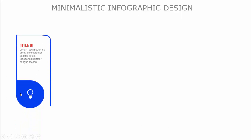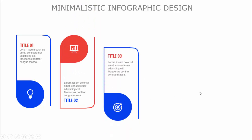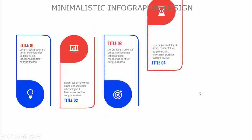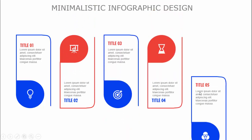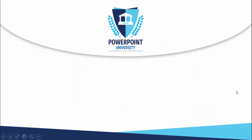You can add some title along with some detailed text. When I click, with a different color combination, the second option comes up, then the third, fourth, and fifth.